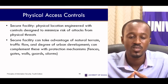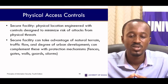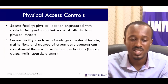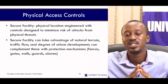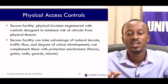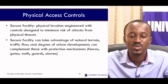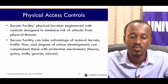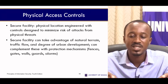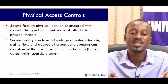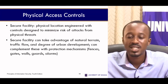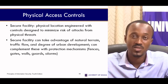Now, to secure a facility, a physical location is engineered with controls designed to minimize risk of attacks from physical threats. A secure facility can take advantage of natural terrain, traffic flow, and degree of urban development. Physical controls can also complement these with protection mechanisms such as fences, gates, walls, bodyguards, and alarm systems.